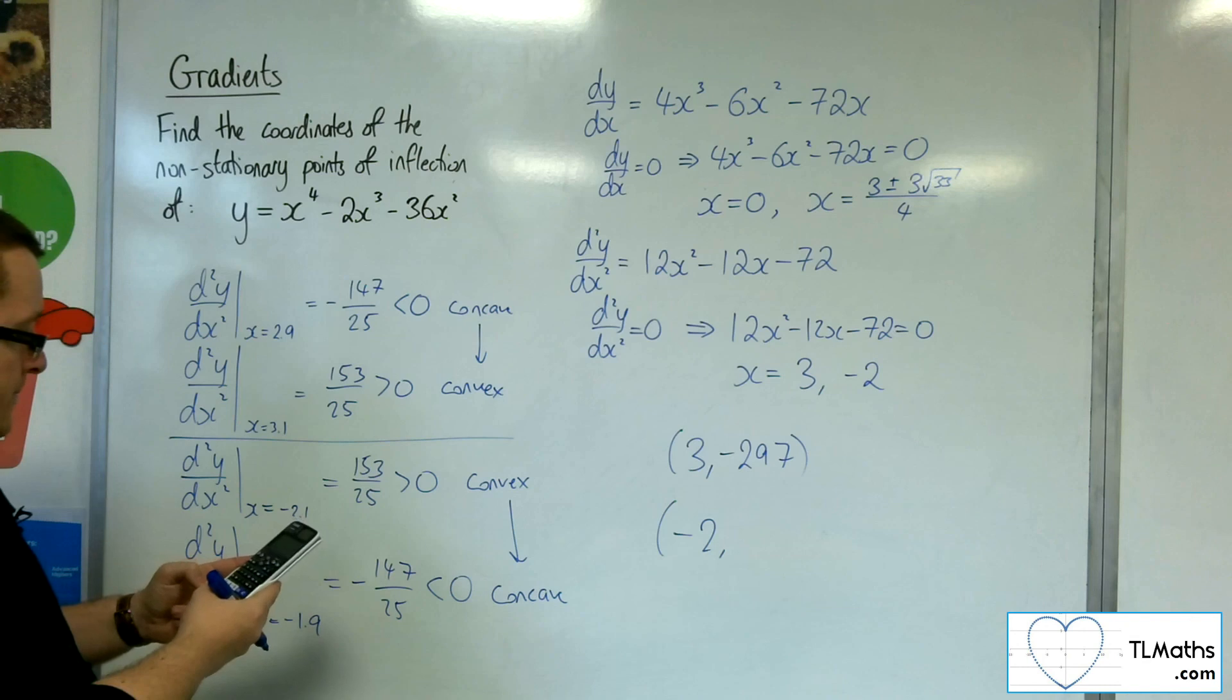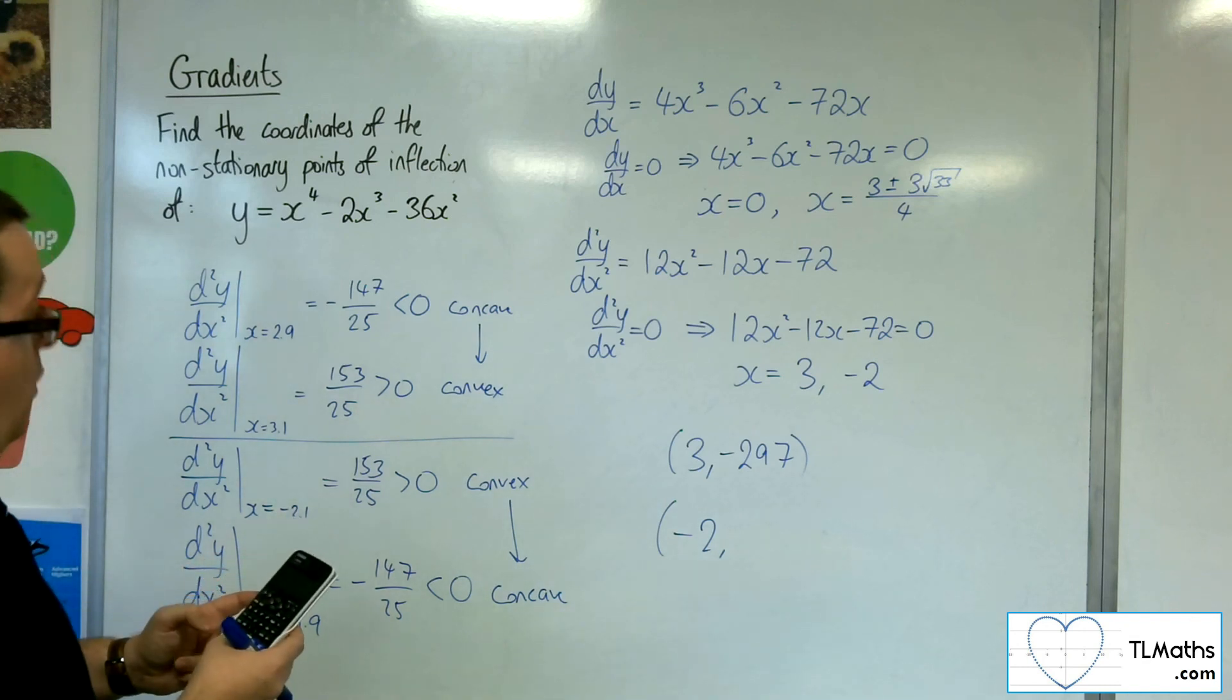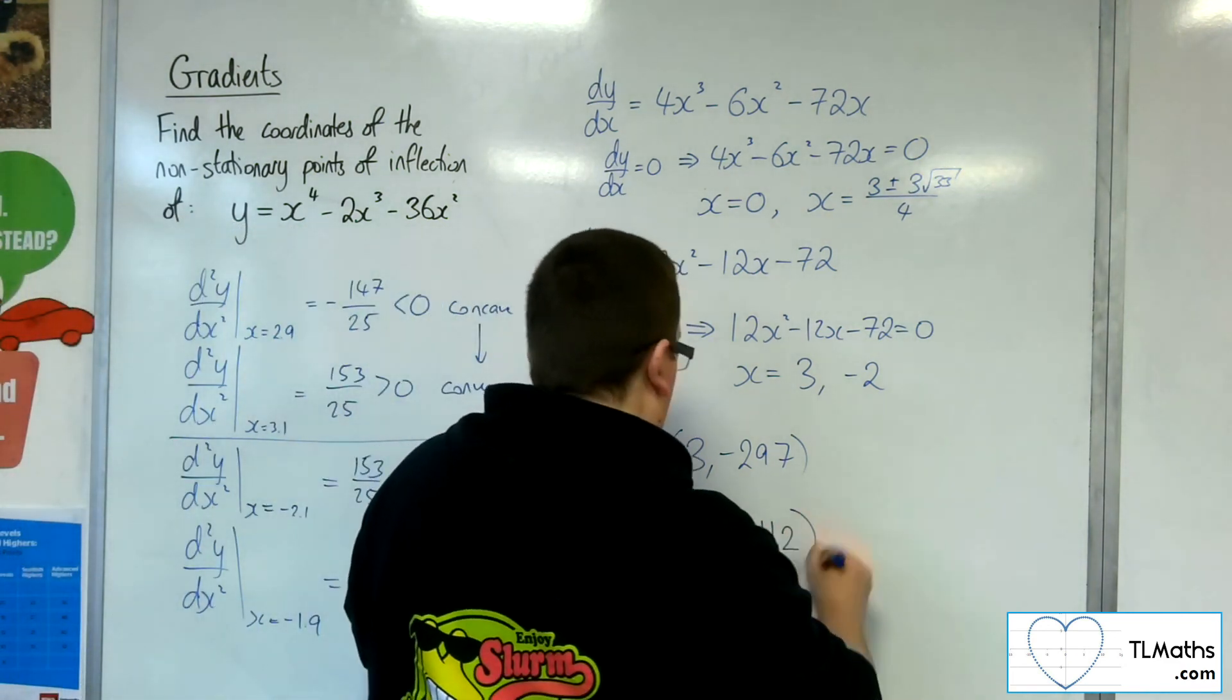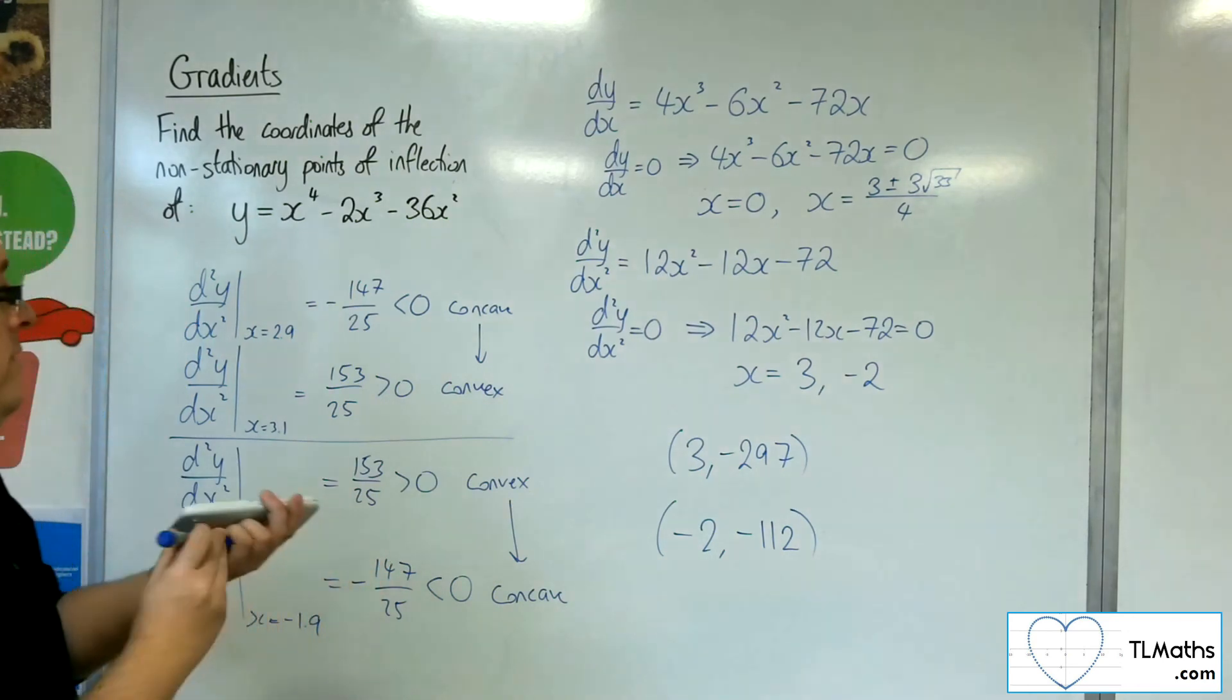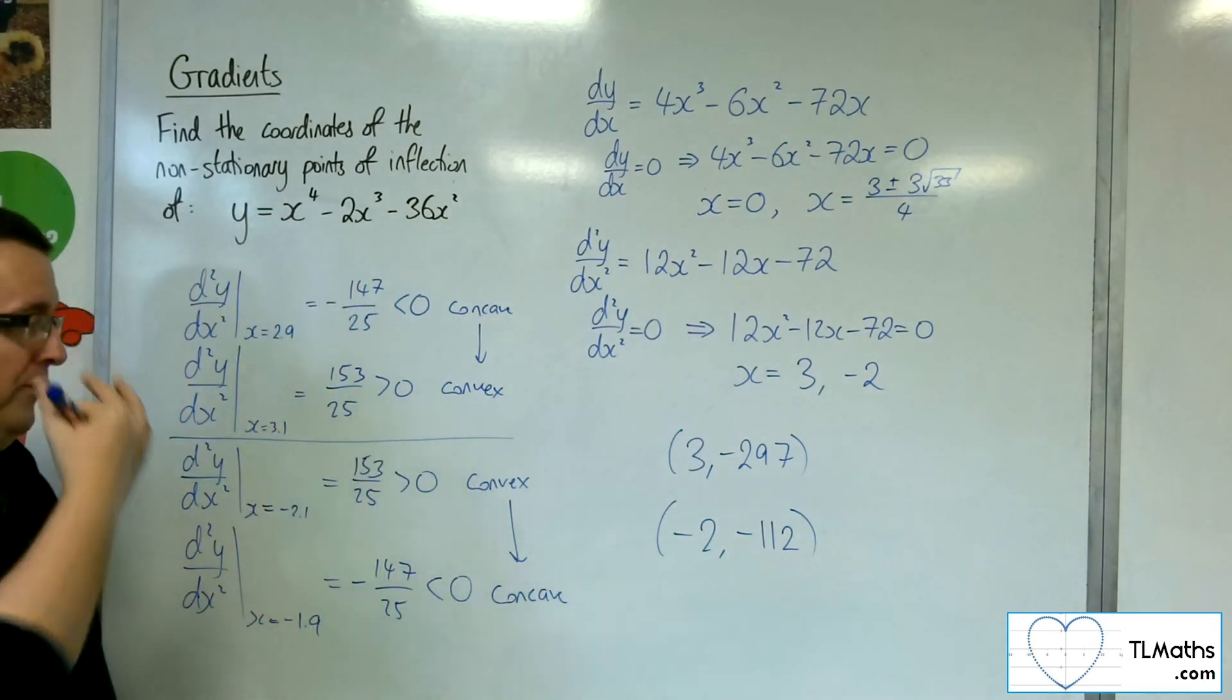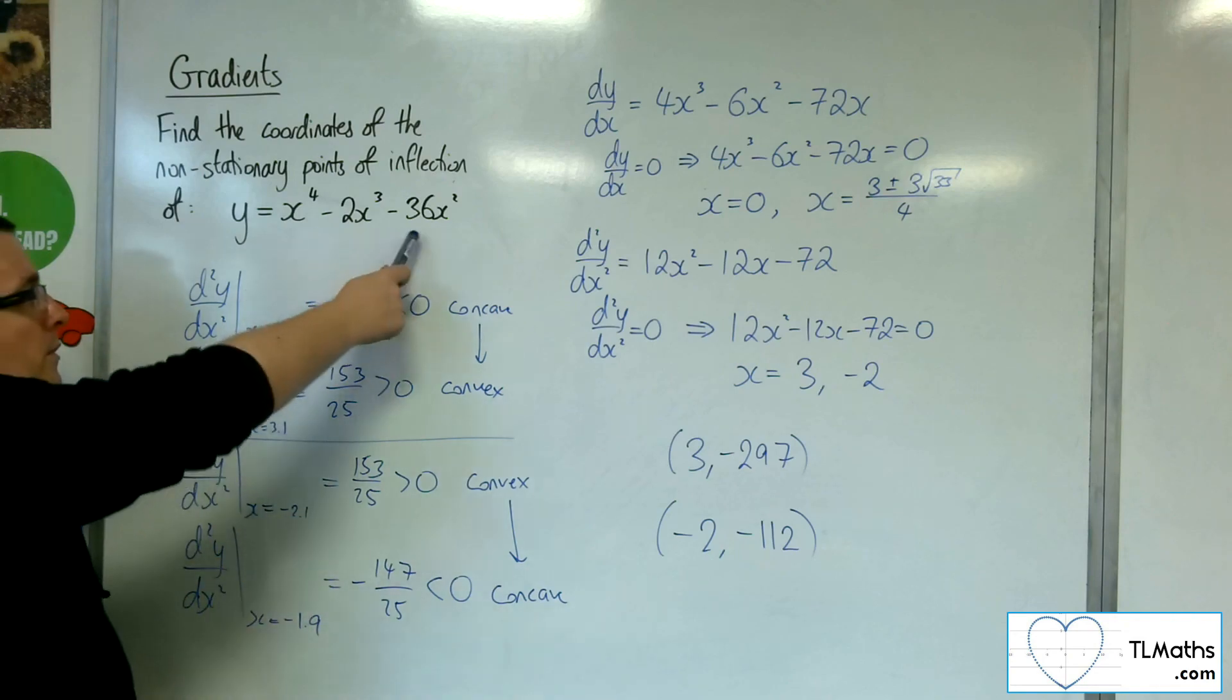substituting that in to the y equals, gets us minus 112. And so those are the two non-stationary points of inflection for this curve.